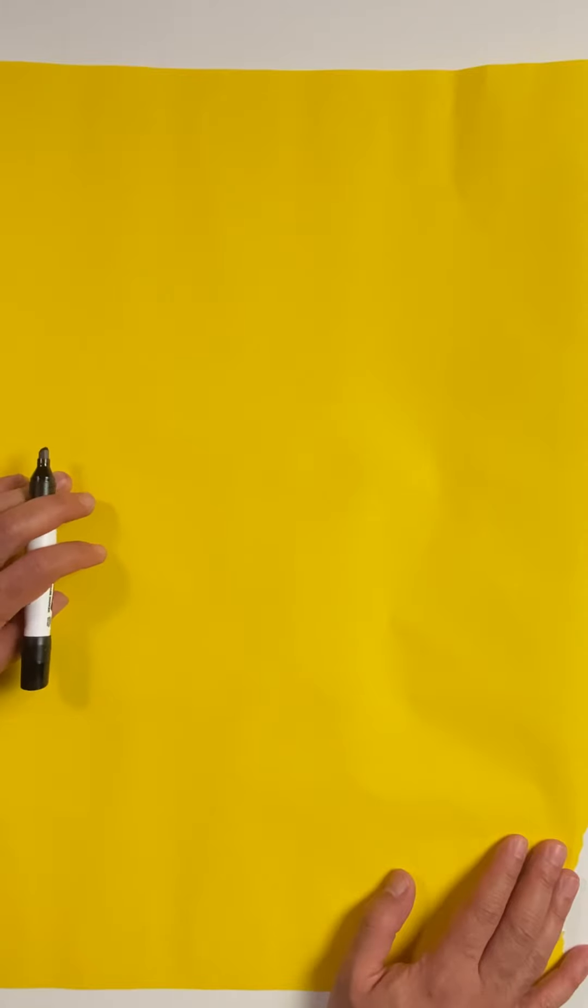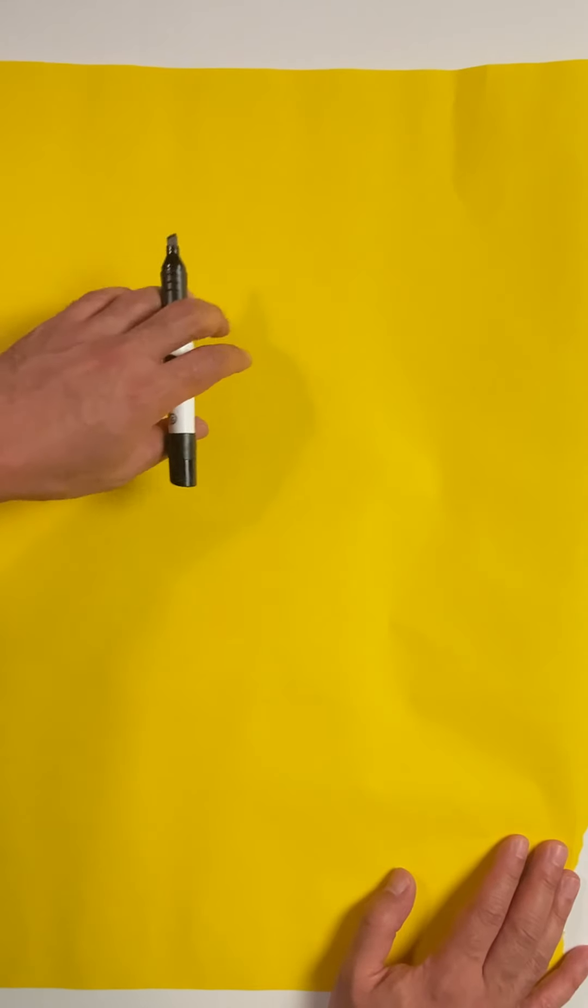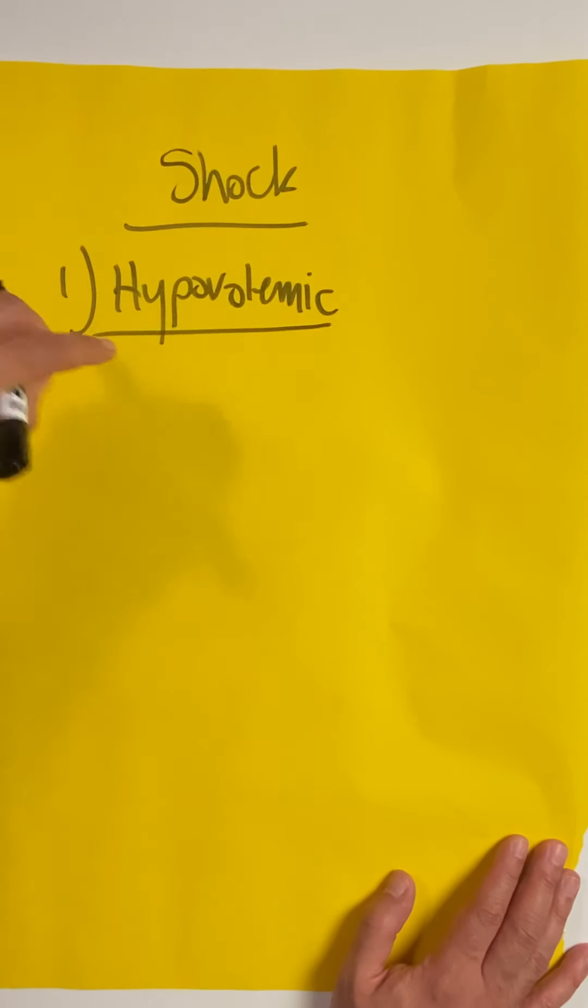I'll go so far as to say you can use this vasopressor in almost every type of shock. If you have somebody in hypovolemic shock, you need to give them back volume. If they're bleeding, they need blood. But in the interim, while waiting for blood to arrive, a low dose of norepinephrine might be suitable for the venoconstrictive effect rather than giving tons of crystalloid, which has its own inherent problems.